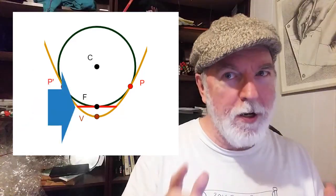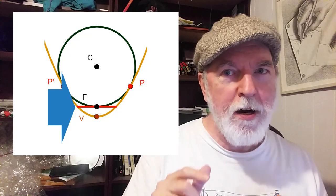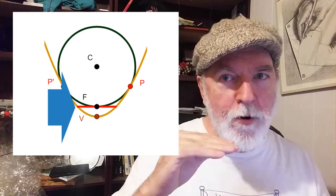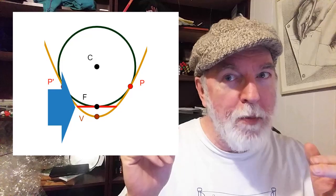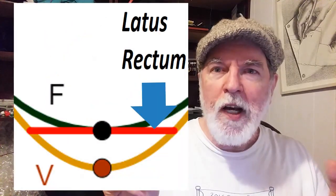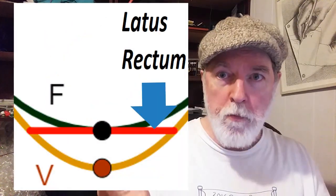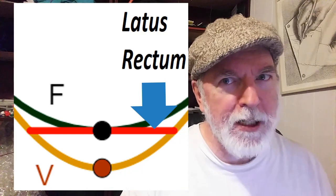This horizontal line, which runs through the focus between opposite points on the parabola, that is called the latus rectum. Okay? I hope you're satisfied.